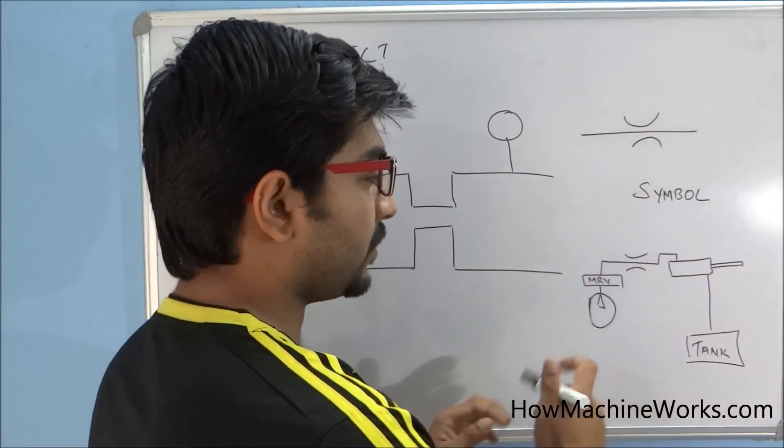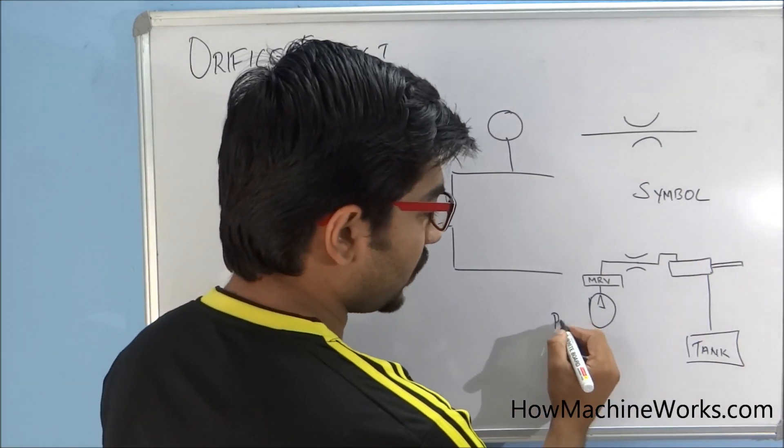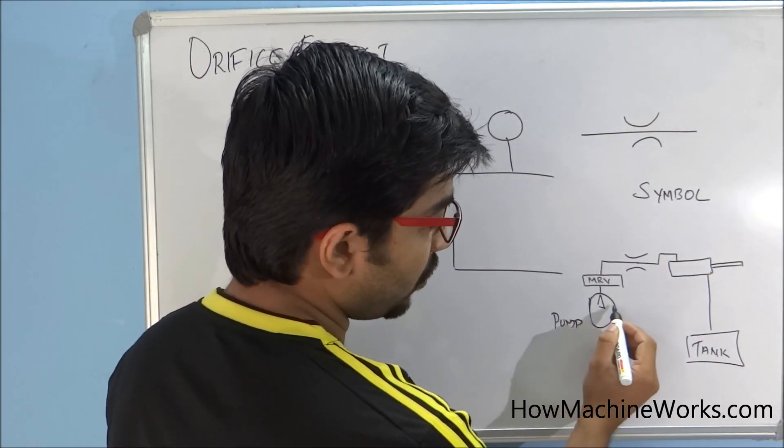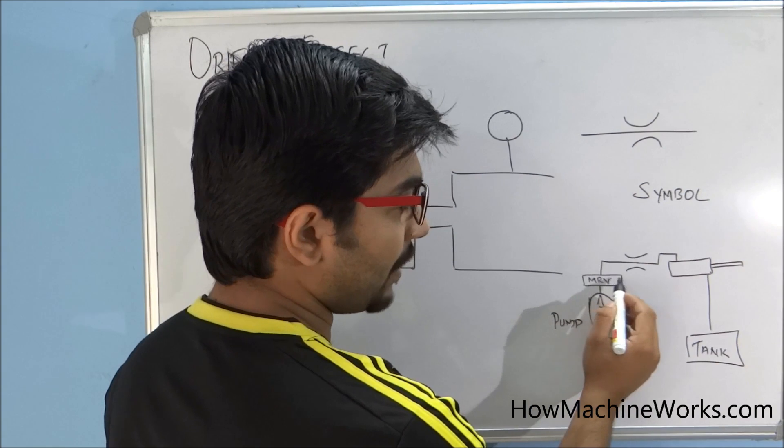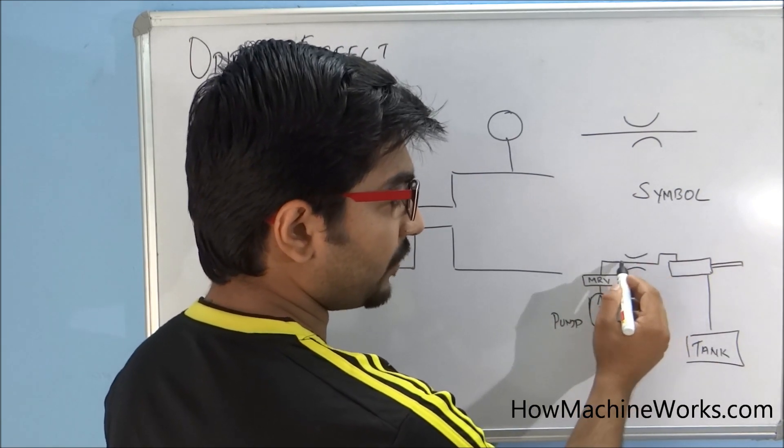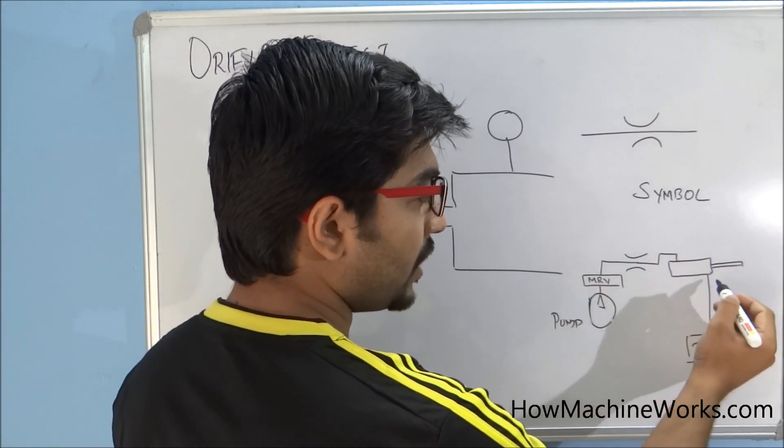This is a simple hydraulic circuit. This is a hydraulic pump, so the flow from the hydraulic pump is going through the MRV, and here we have the orifice. This is a hydraulic ram, and this is a return tank.